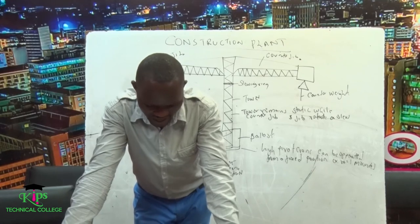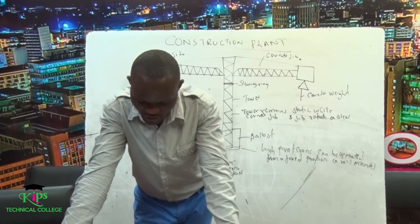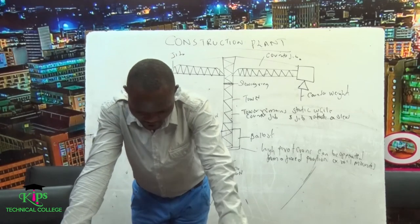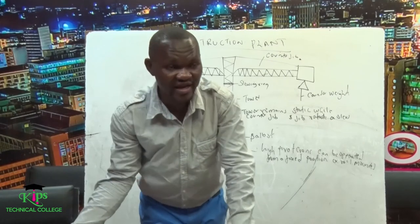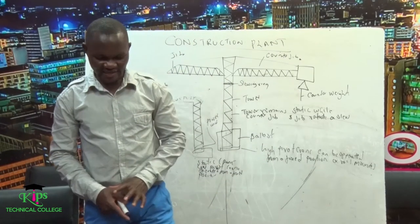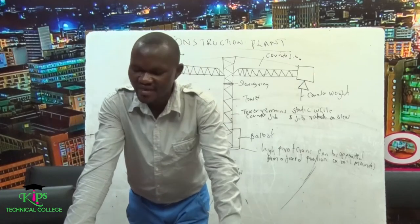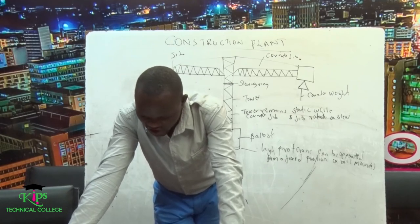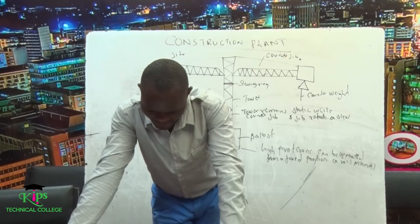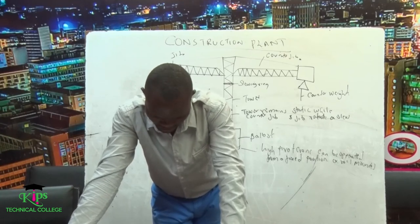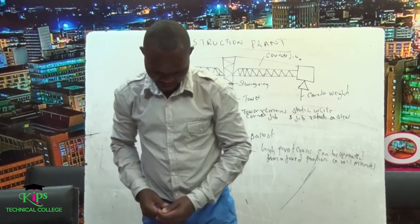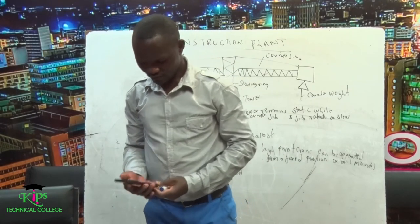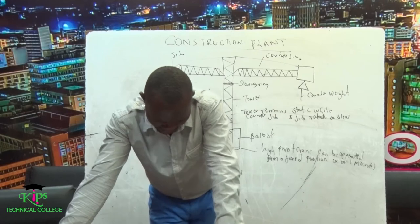Another type of crane is the lorry-mounted lattice jib crane. As indicated in the diagram, these are the parts you have to identify when drawing this crane in an exam. We have the jib suspension, the diesel engine lorry, the pendant or luffing rope, the main hoist rope, and the jib block.